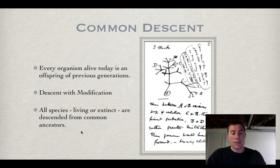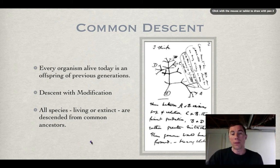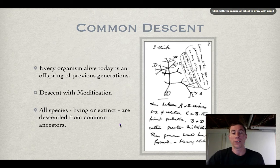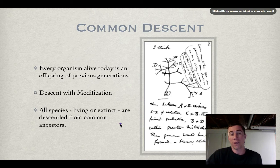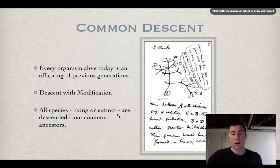The last thing we'll cover today is common descent. What common descent means is that every organism alive today, or what are called modern organisms, is an offspring of previous generations. These current organisms descend with modifications — they change over time. To summarize: all species, whether living or extinct, are descended from a common ancestor.